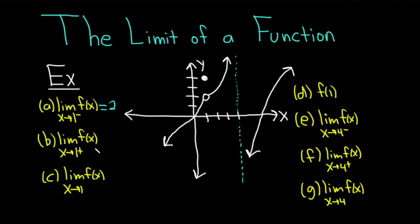Now let's do the same thing, but approaching 1 from the right. In part b, we want the limit of f of x as x approaches 1 from the right. Approaching from the right, you can see that the y value also approaches 2. The answer is also 2.